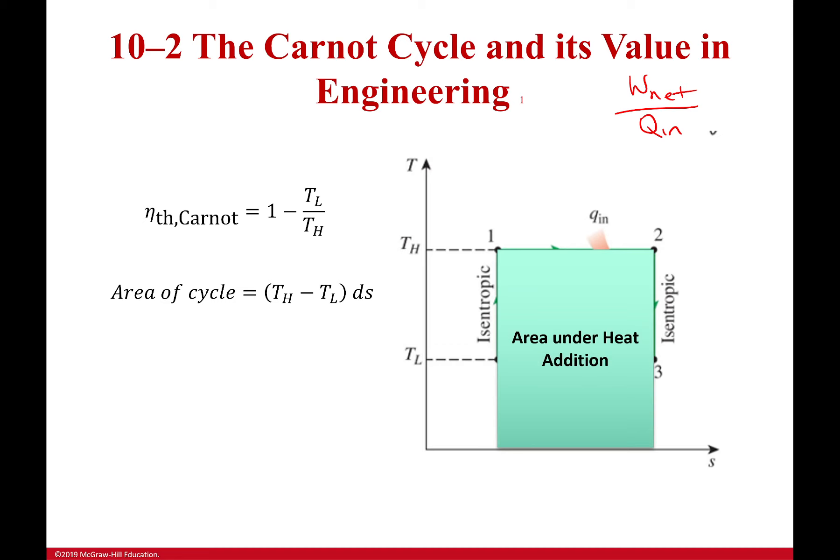Now the area under the top, and as a note if I had lines like this it would be the area under every single line along the top, that's the heat addition. So that'd be T_high times Δs. Now if I take my network which is T_high minus T_low times Δs divided by the heat addition I get one minus T_low over T_high.